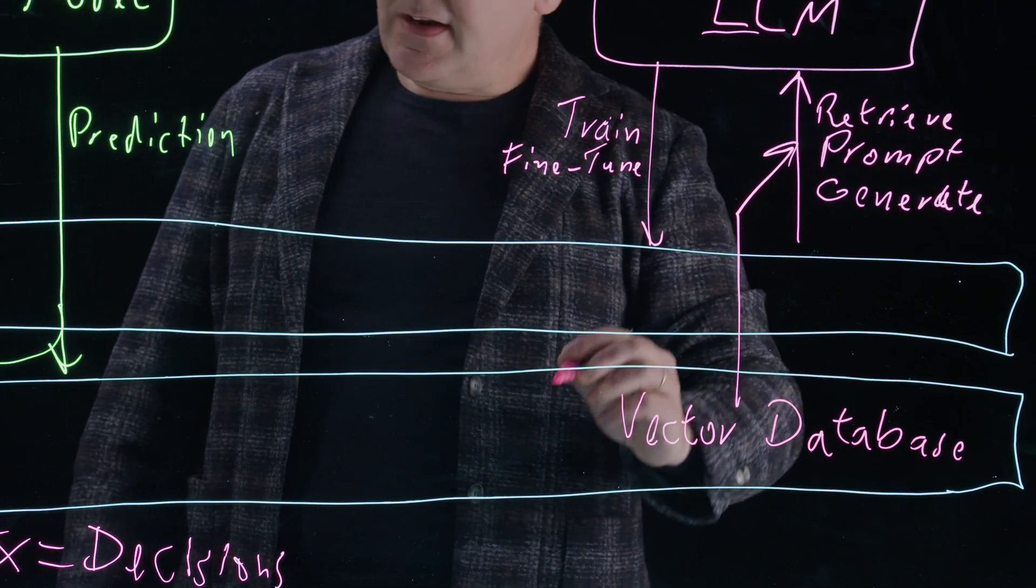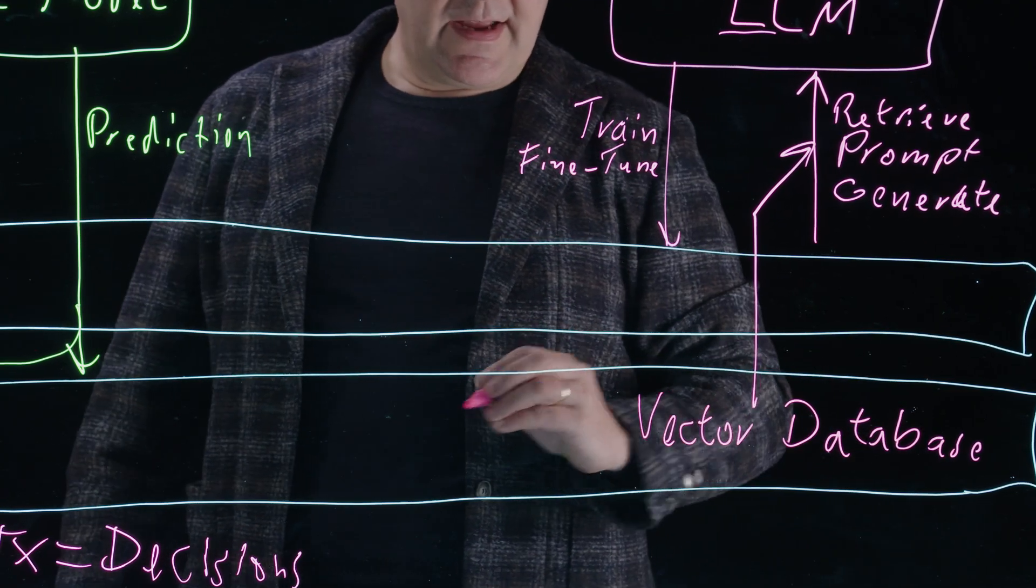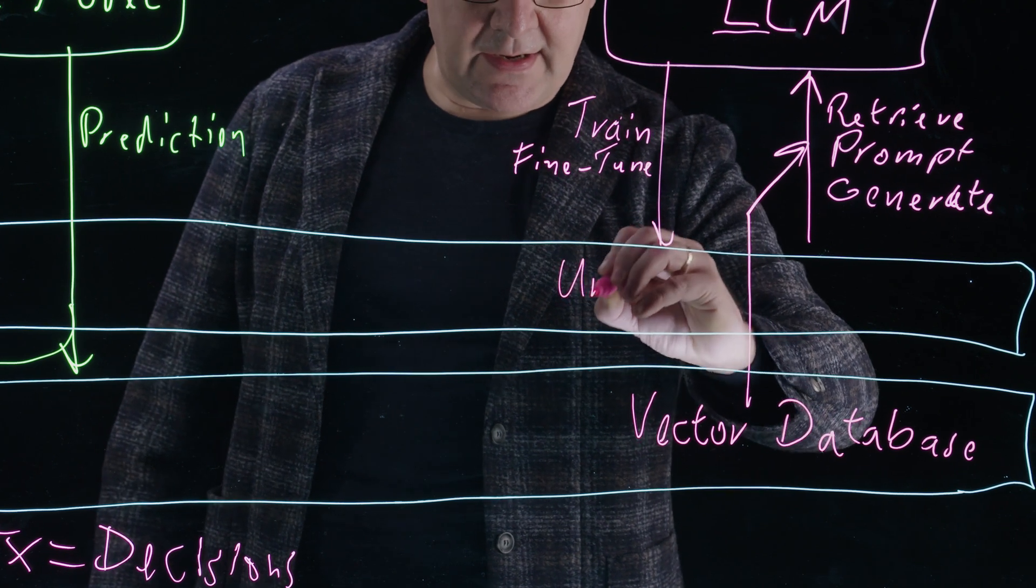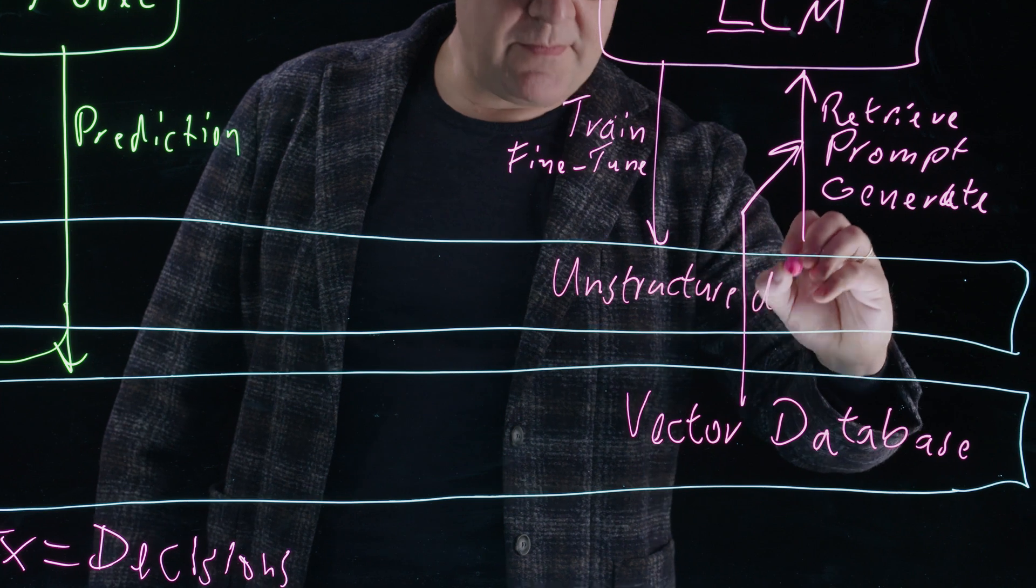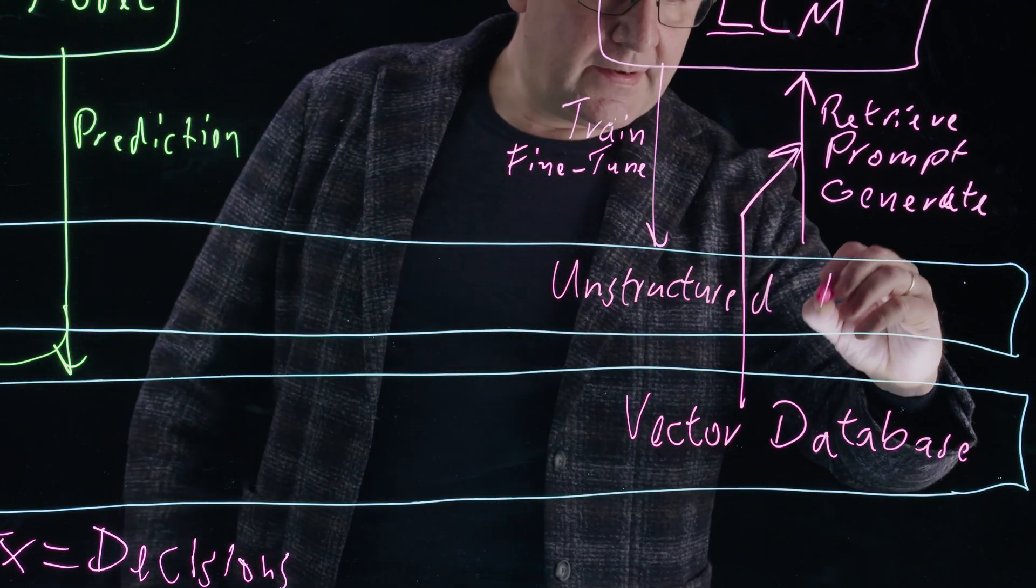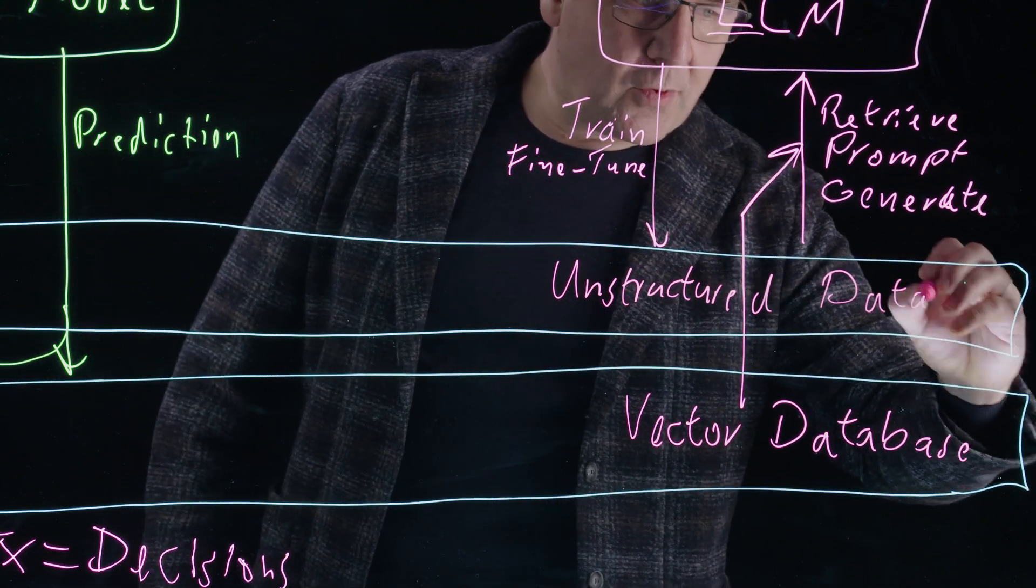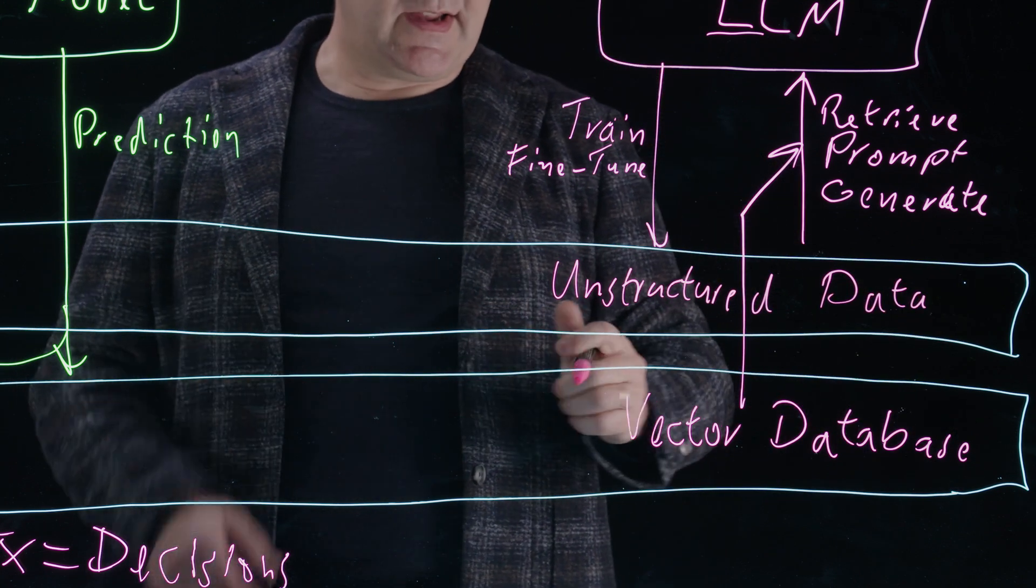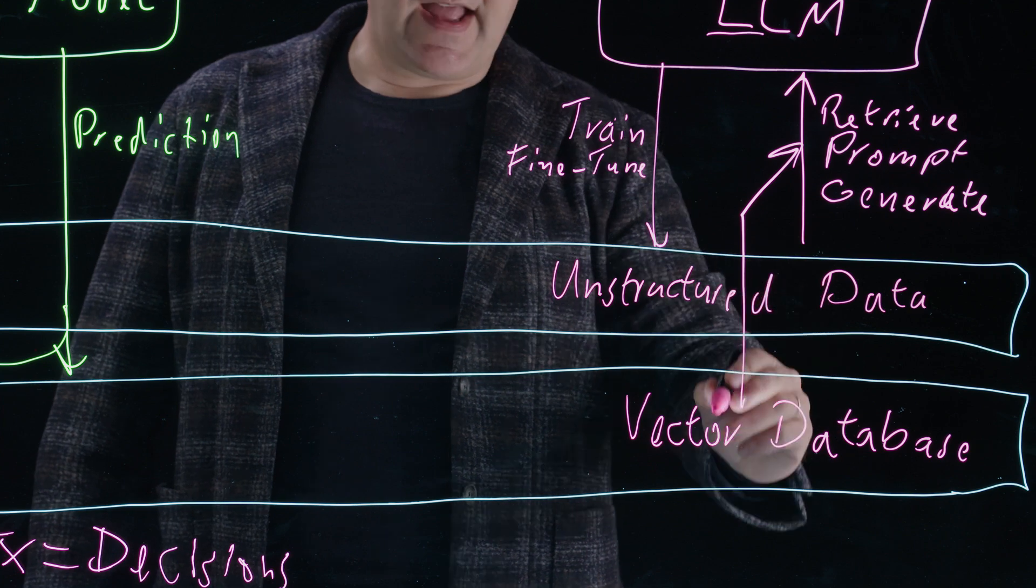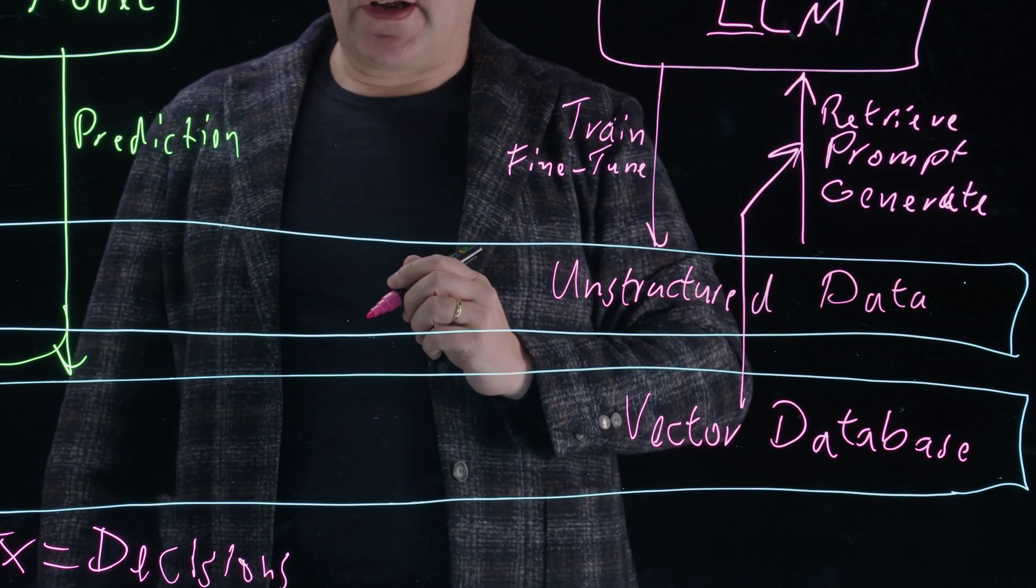A vector database enables you to do exactly this: retrieving data that you then feed to a large language model. Because the data that you're retrieving here that you find in the lakehouse is actually now unstructured data. And when I say unstructured, I mean things like documents or images. It's large corpuses of data that is relevant to your private data, your corporate data. You're retrieving this data with the help of vector databases and feeding it into the large language model.